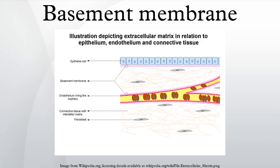Function and importance: The primary function of the basement membrane is to anchor the epithelium to its loose connective tissue underneath. This is achieved by cell-matrix adhesions through substrate adhesion molecules. The basement membrane acts as a mechanical barrier, preventing malignant cells from invading the deeper tissues. Early stages of malignancy thus limited to the epithelial layer by the basement membrane are called carcinoma in situ.